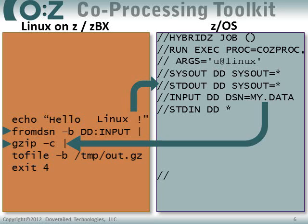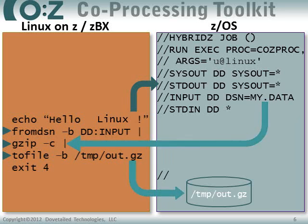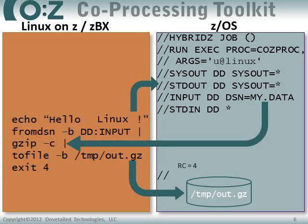The output goes to standard out, which is piped to the Linux gzip command, which compresses that data on the fly. Notice the two triangles on the left — this is happening in parallel. As the data is being read, the compression is occurring. Gzip compresses and writes its data to standard out, which is then sent to another dataset pipes command, to file, which takes the compressed data and writes it to a ZOS Unix System Services file called /temp/out.gz. When the job completes, from DSN finishes reading its data, gzip finishes compressing, and to file finishes writing. Finally, the exit code of four is issued from the shell script, which is adopted by ZOS as the job step condition code.